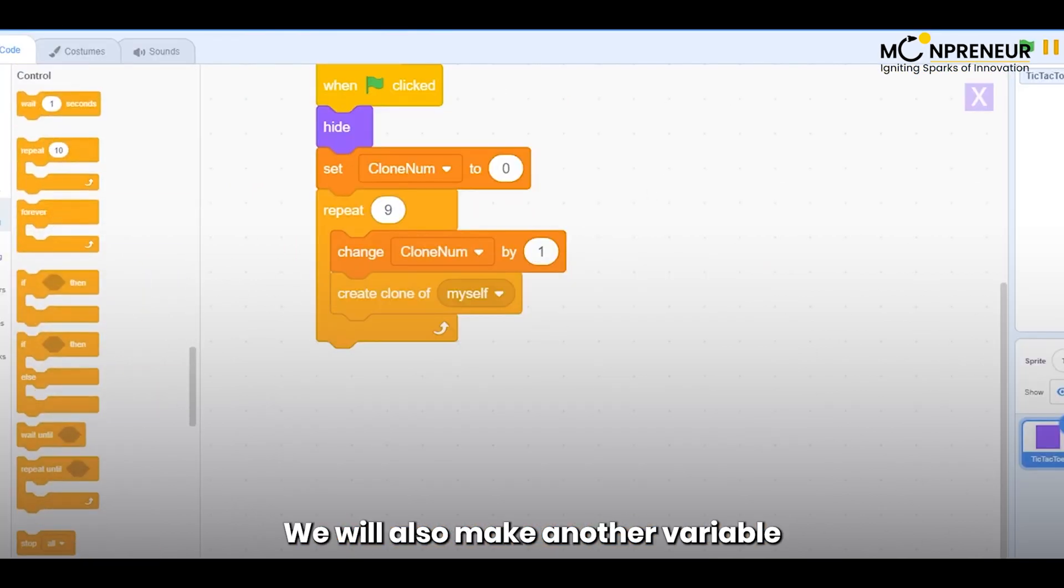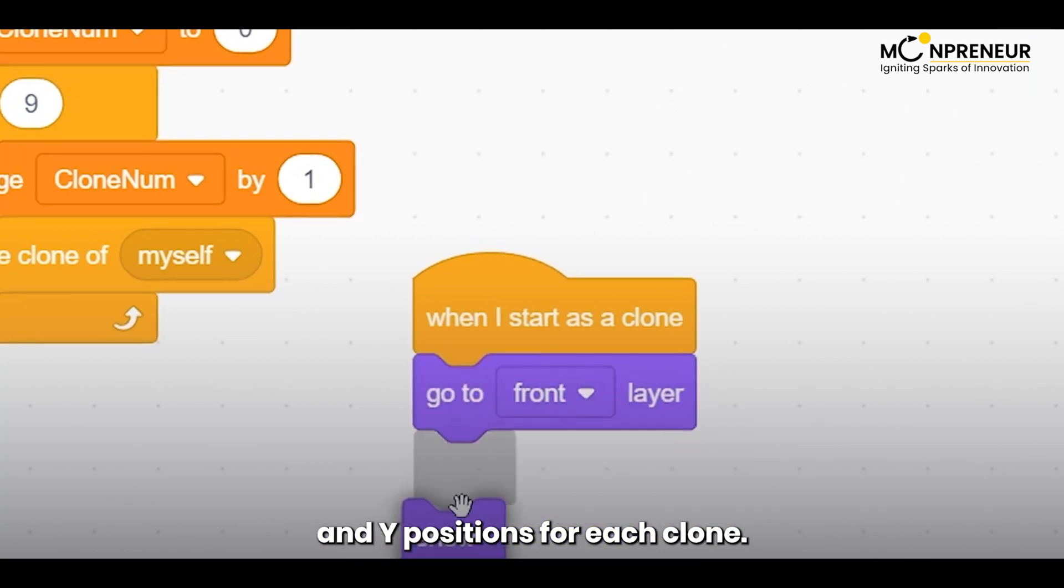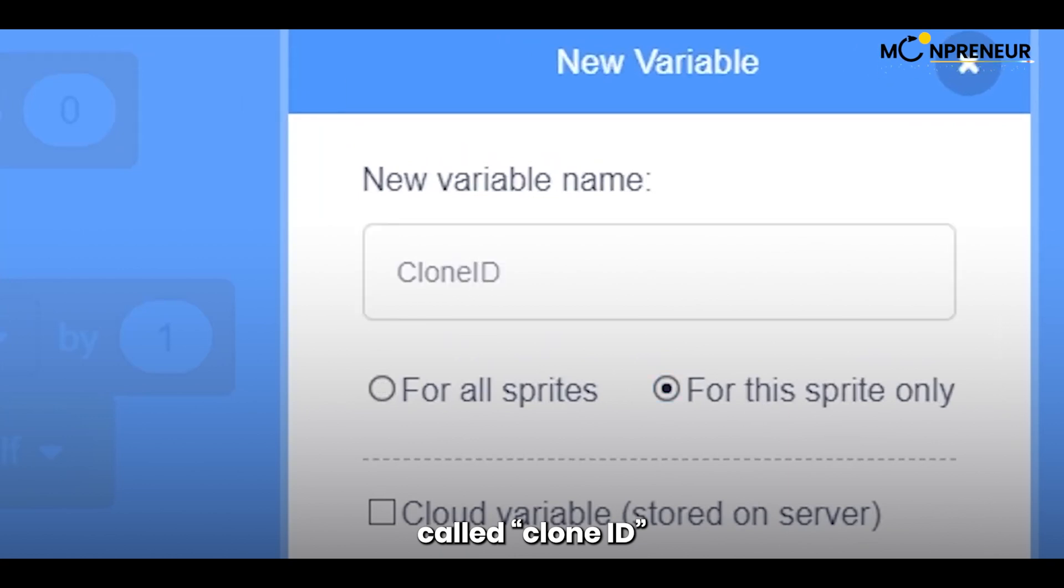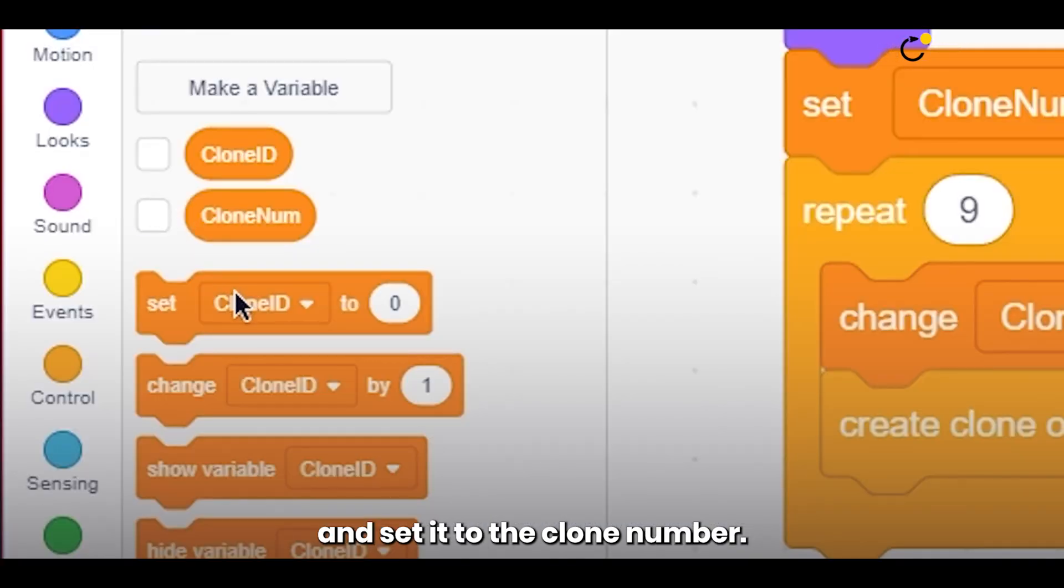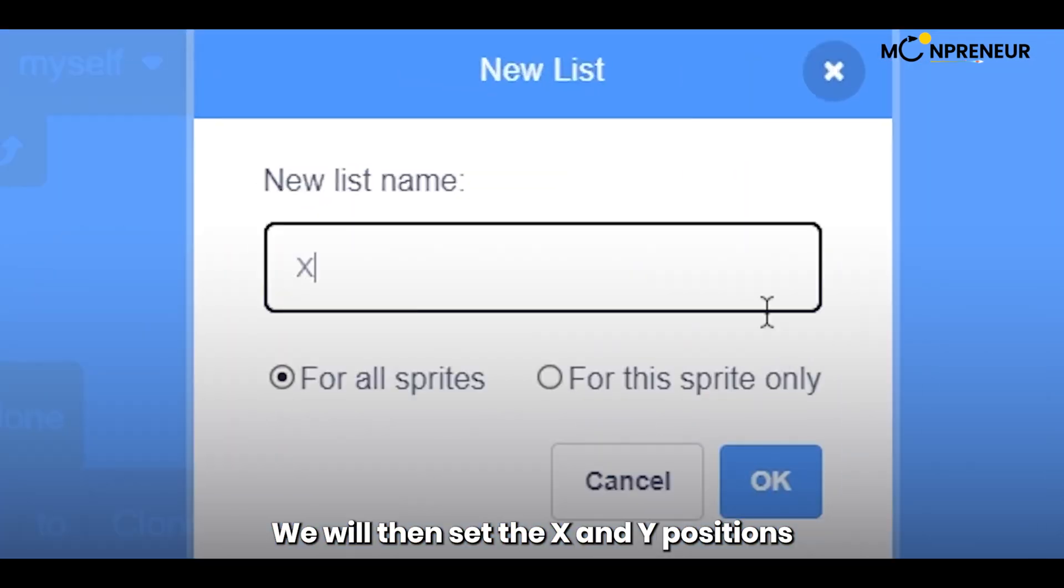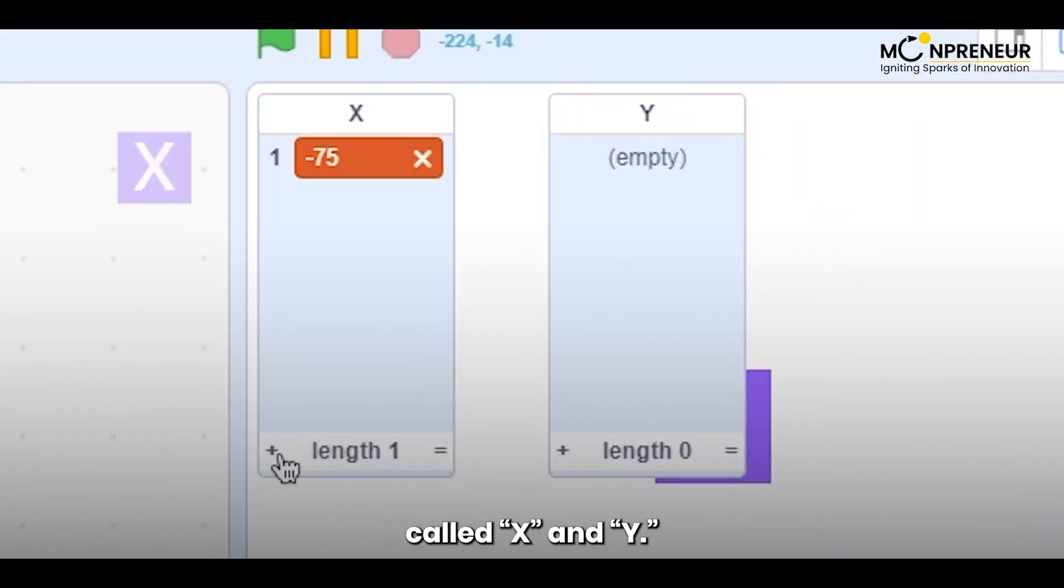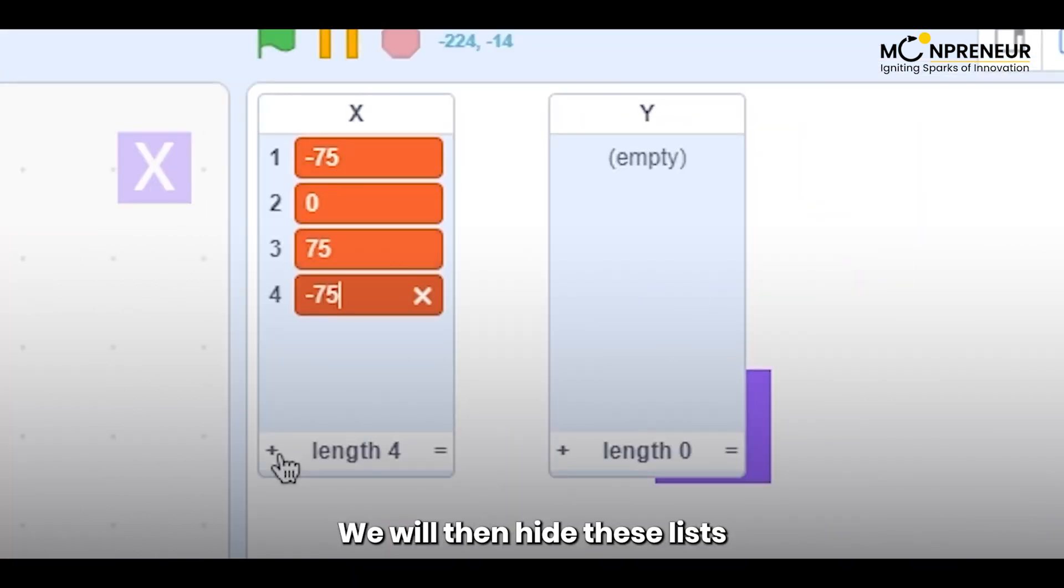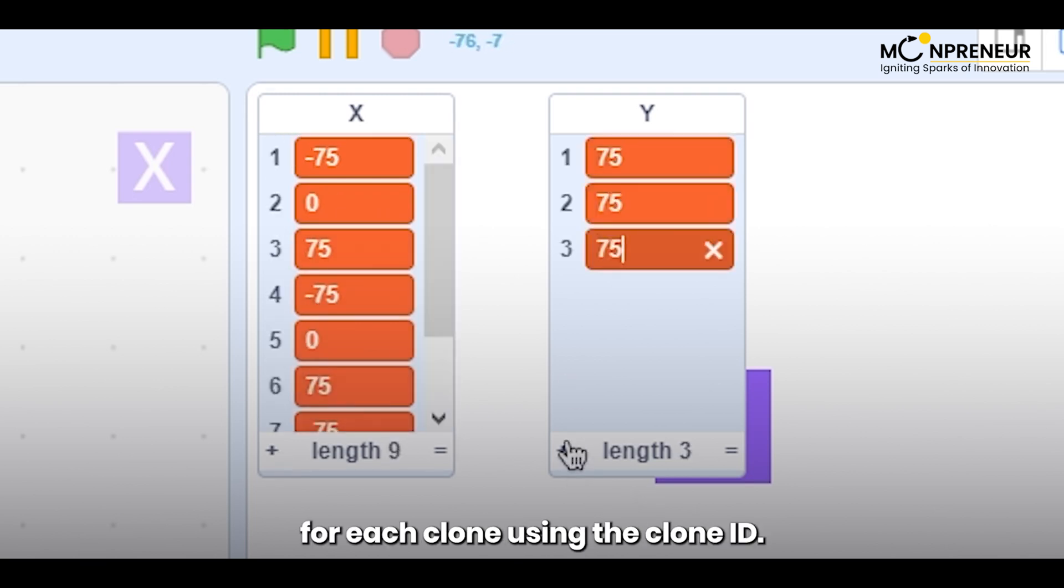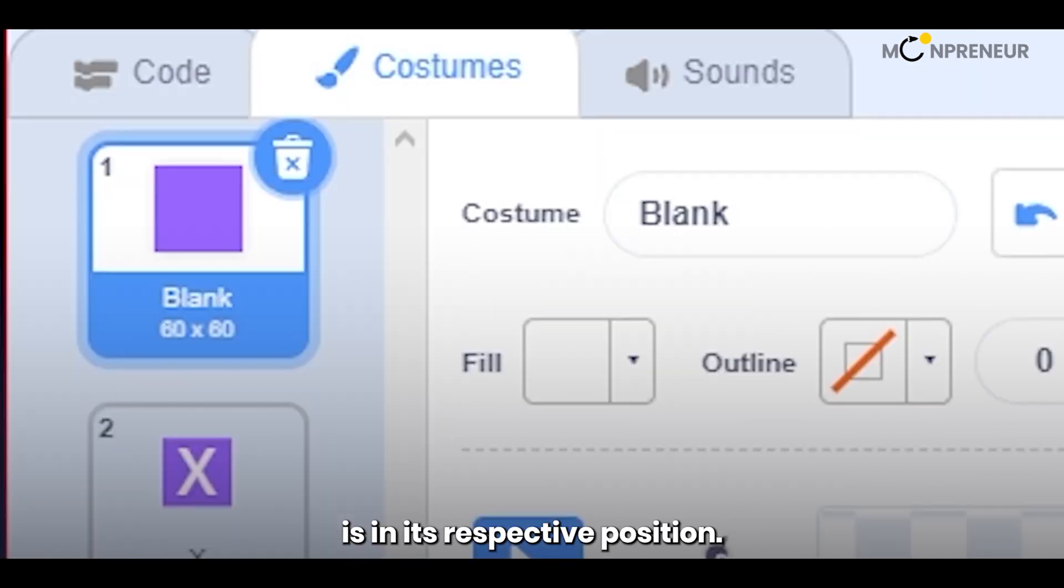We will also make another variable called cloneID that will help us set the X and Y positions for each clone. We will also create a variable called cloneID and set it to the clone number. This will ensure that each clone has a unique clone ID. We will then set the X and Y positions for each clone using two lists called X and Y. We will then hide these lists and put in the X and Y positions for each clone using the clone ID. This will ensure that each clone is in its respective position.